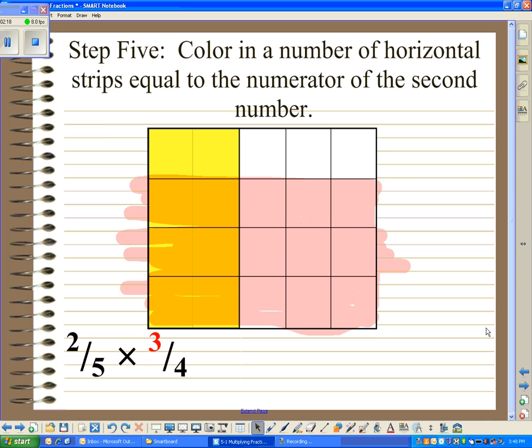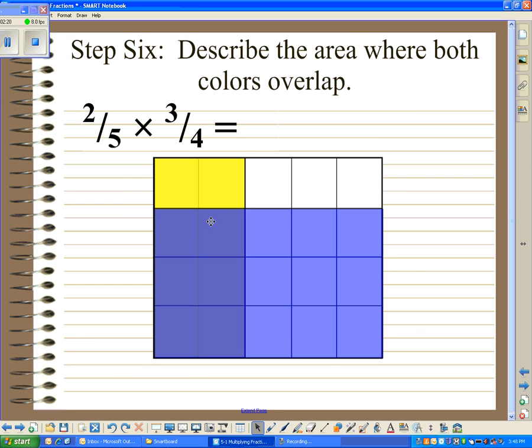Once we've done this, the only remaining step is to describe the area where the two colors overlap. So we can do that by counting squares. We have six squares where the two colors overlap. So that's six squares. But the question then is out of how many squares? We have twenty squares. So six of the twenty squares were colored with both colors. So our answer in this case is 6/20.